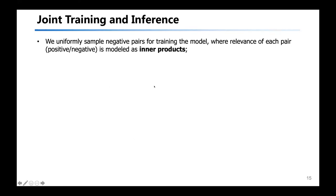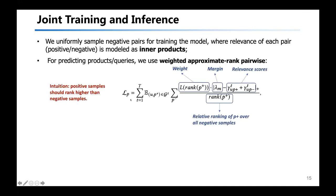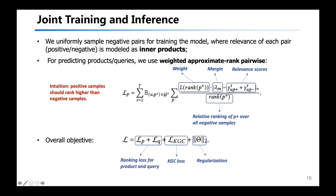Based on the learned embeddings, we use an inner product to model the relevance for each pair of user-query and user-product. To train the model, we utilize the weighted approximate ranking pairwise (WARP) loss. For each user, we sample positive and negative products or queries; the intuition is that positive samples should be ranked higher than negative samples, otherwise there is a penalty weighted by the relative ranking of the positive samples among all negatives. Our overall objective includes two main parts: the ranking loss for both product and query prediction, and a knowledge graph completion loss to regularize the raw embeddings of entities in the knowledge graph.